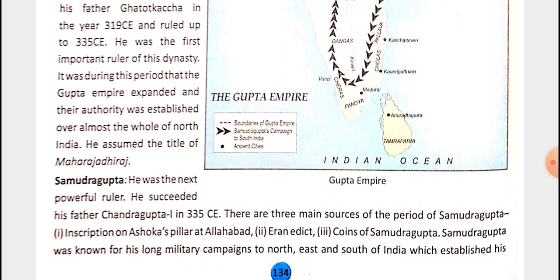The next powerful ruler of the Gupta Empire was Samudragupta. He succeeded his father Chandragupta I in 335 CE. There are three main sources of information about the period of Samudragupta. The first is the inscriptions on Ashoka's pillar at Allahabad.